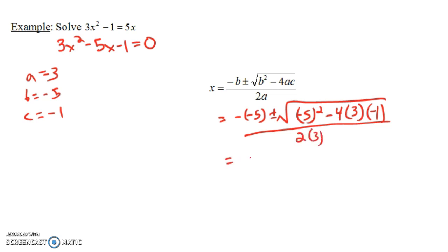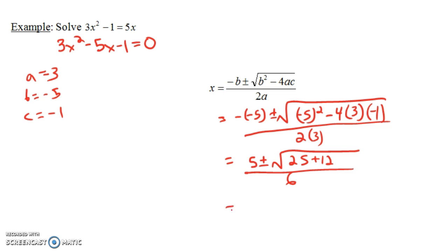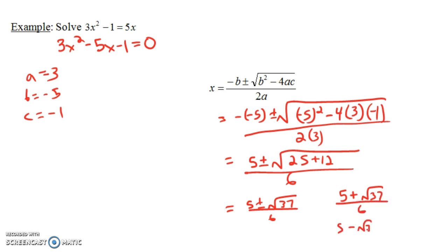Simplifying: negative negative 5 is 5, and for the discriminant we have 25 minus 4 times 3 times negative 1. The two negatives become a plus, giving us 25 plus 12 equals 37. So we get 5 plus or minus the square root of 37, all over 6. That's two solutions: 5 plus the square root of 37 over 6, and 5 minus the square root of 37 over 6.